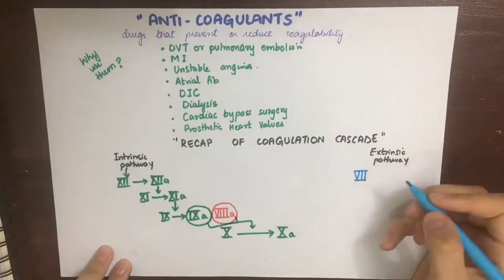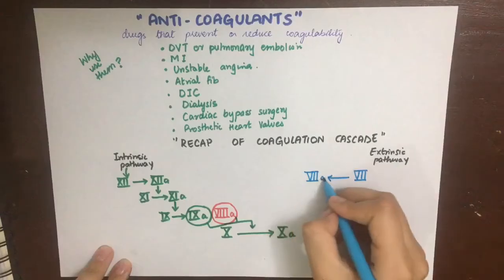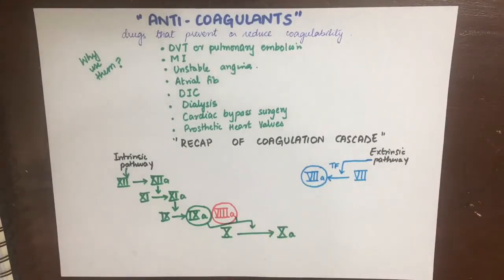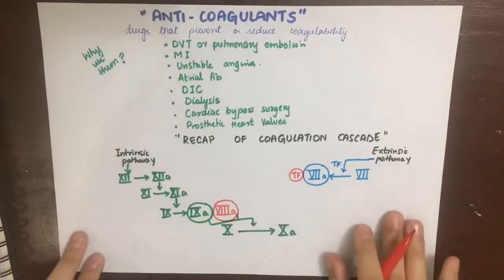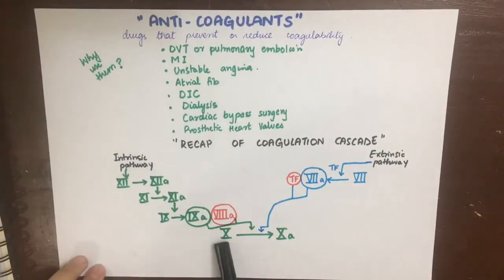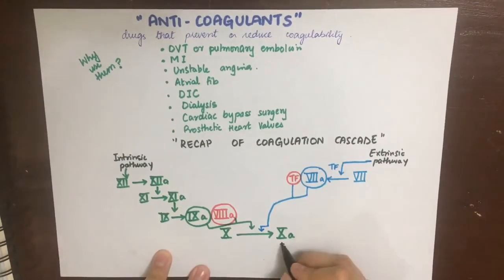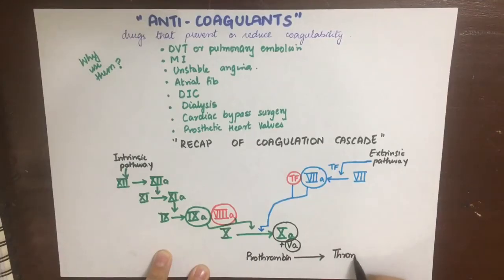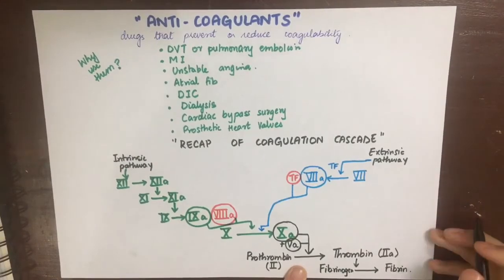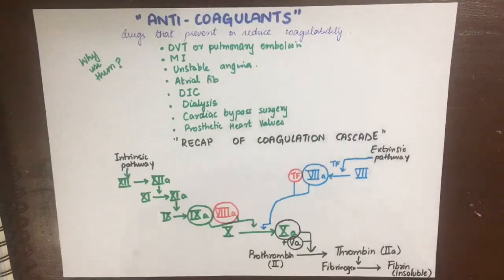Another way factor 10 can be converted into 10a is when the extrinsic pathway is activated. The tissue factor is exposed by any injury to the endothelium, which converts 7 into 7a, and both 7a and tissue factor can then act on factor 10 to convert it into factor 10a. Factor 10a will then in association with factor 5a act on prothrombin, which is factor 2, and convert it into thrombin, which is factor 2a. Thrombin will then act on fibrinogen, which is soluble, and convert it into insoluble fibrin, thus starting clot formation.